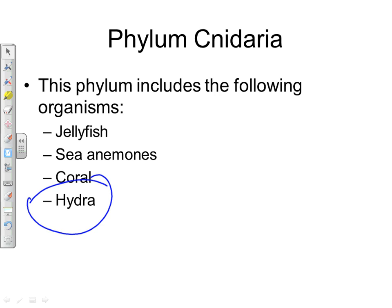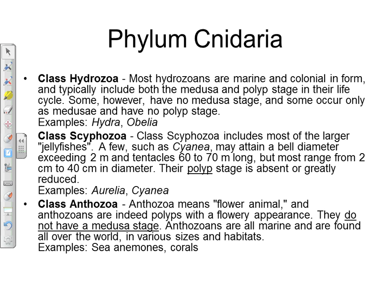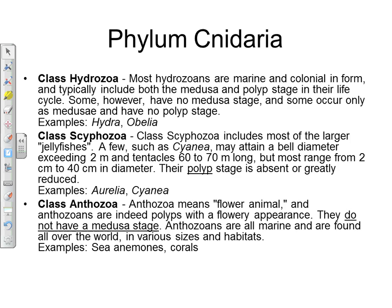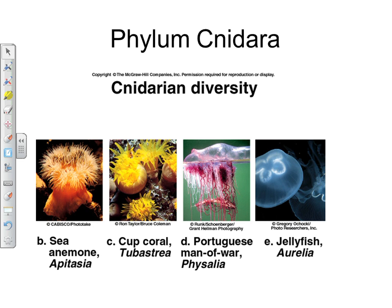There are three main classes in the phylum Cnidaria. Hydrozoa includes the hydras. Scyphozoa includes the jellyfish — what we normally think of as jellyfish. Anthozoa, which literally means 'flower animal,' includes sea anemones that look more like plants than animals, but are animals because they're multicellular, heterotrophic, eukaryotic, and their cells lack cell walls. Anthozoans typically don't have a medusa stage and exist only as polyps.